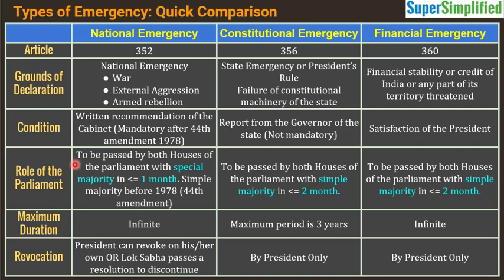What is the role of Parliament in all three types? The proclamation of national emergency must be approved by both houses of Parliament within one month of the proclamation, and by a special majority. Special majority means 75% of the strength present and voting, and 50% of the total strength of the house must vote in favor. Within one month this resolution must be passed in both houses, otherwise it will be declared null and void. This special majority provision was introduced in 1978; before that, a simple majority sufficed.